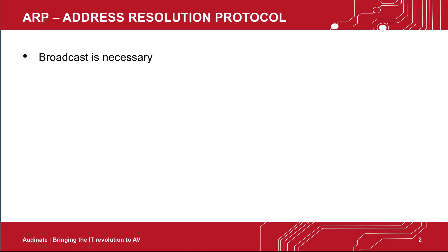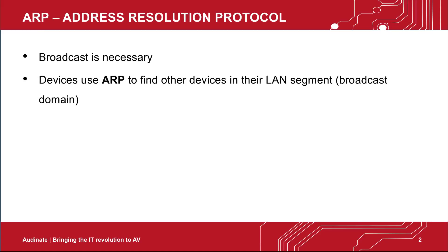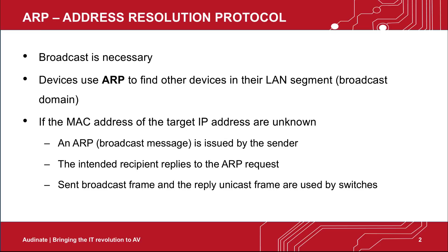Broadcast is necessary to facilitate unicast communication. Devices use ARP to find other devices in their LAN segment. If the MAC address of the target IP address is unknown, an ARP request is issued by the sender. The intended recipient replies to that ARP request. The sent broadcast frame and the reply unicast frame are used by switches. This fundamental exchange is what makes switching in a LAN efficient. ARP is one of the simplest and most common protocols to understand for data exchange — it's one of the building blocks for communication.